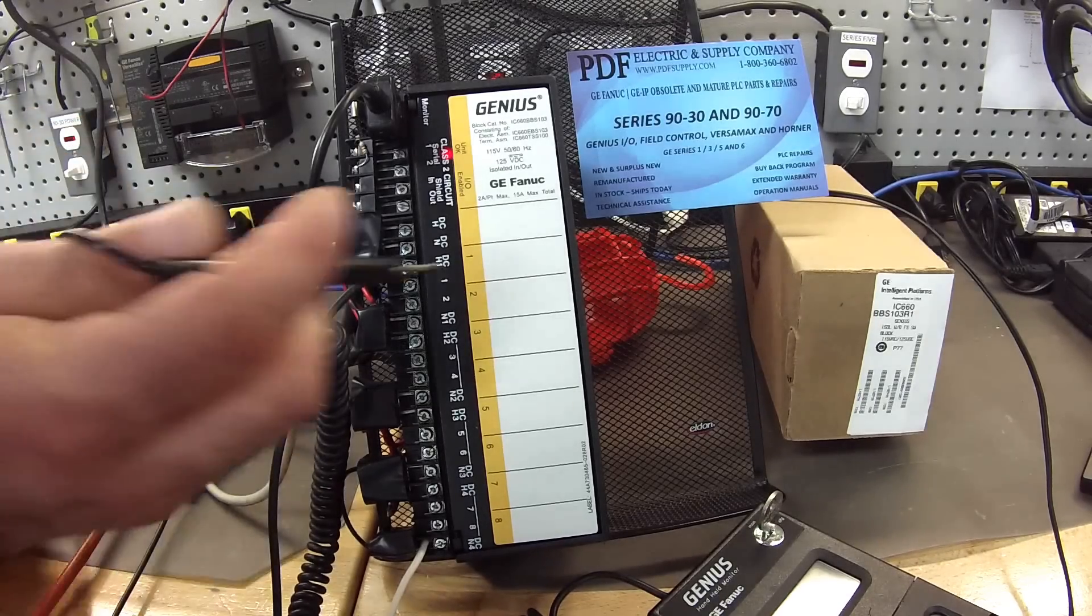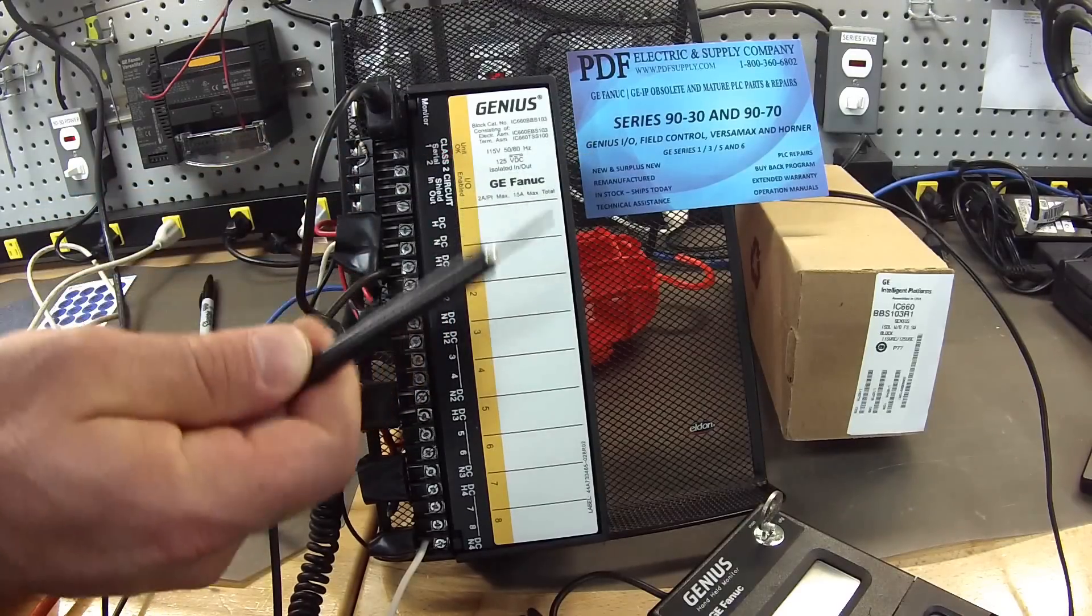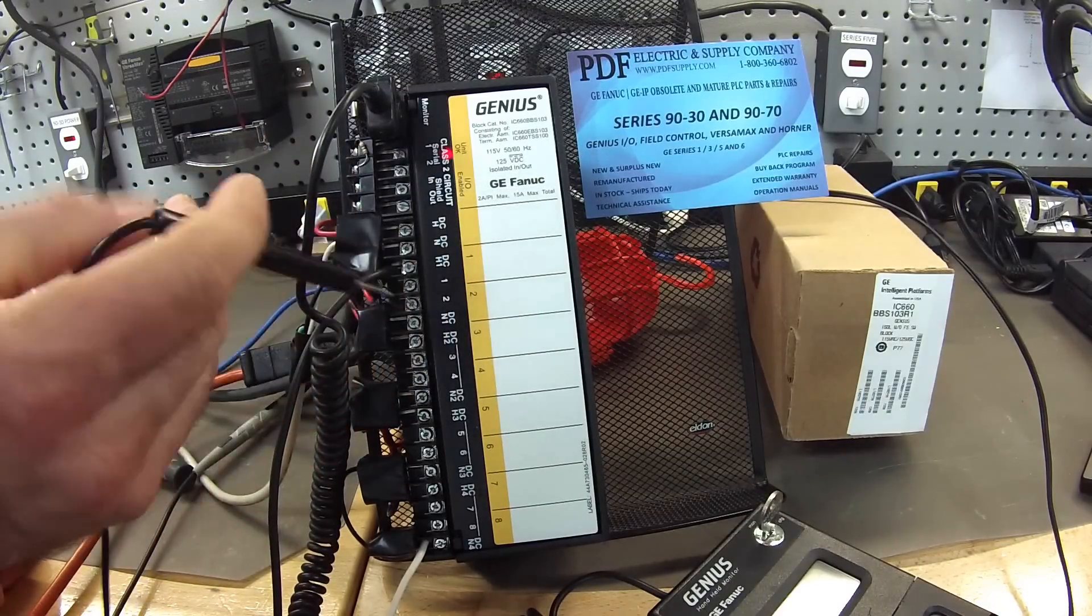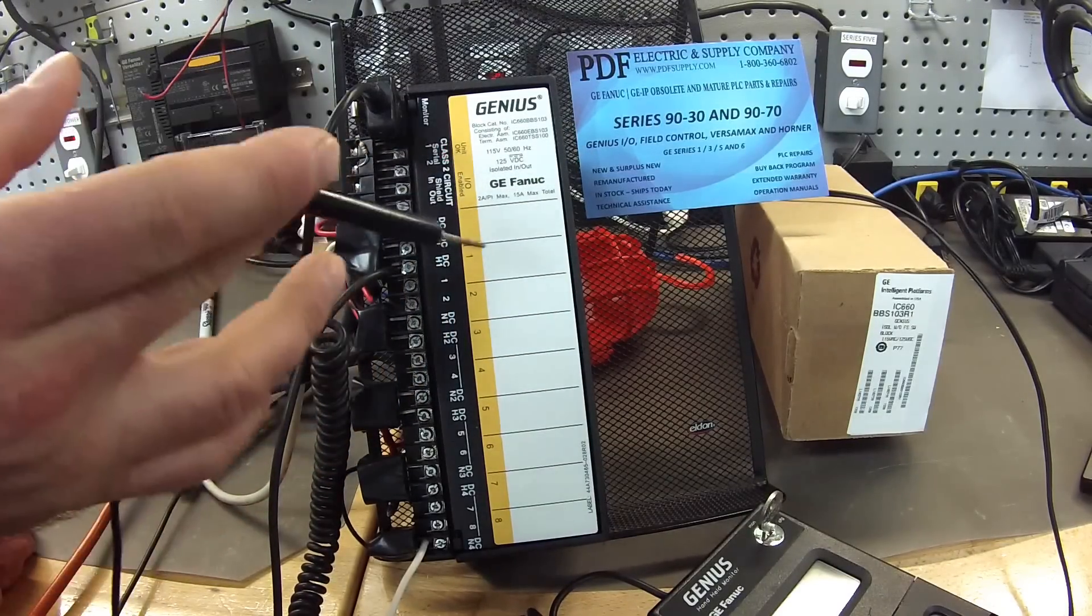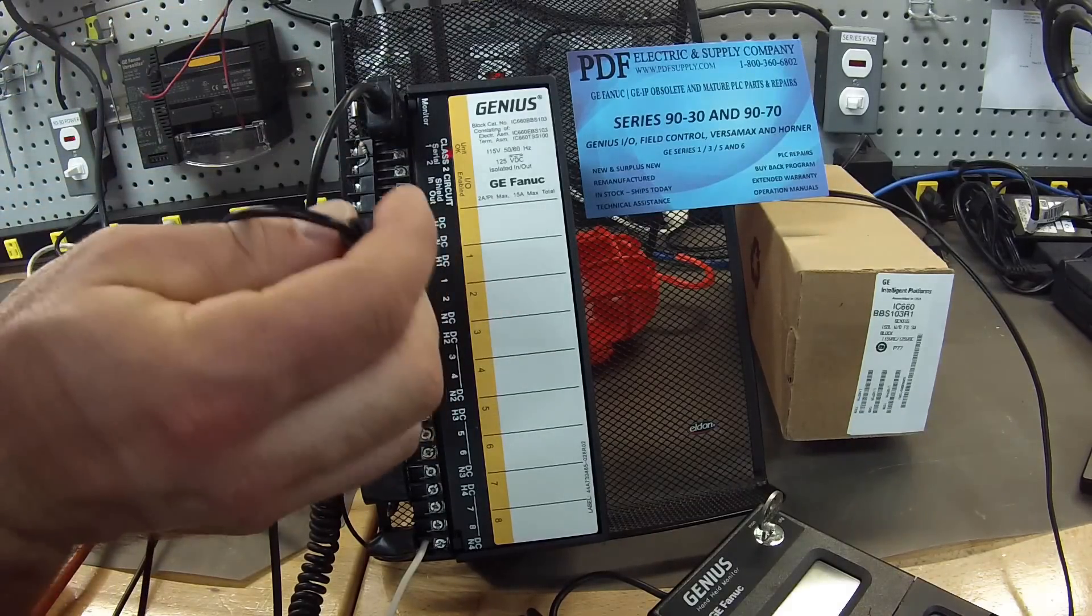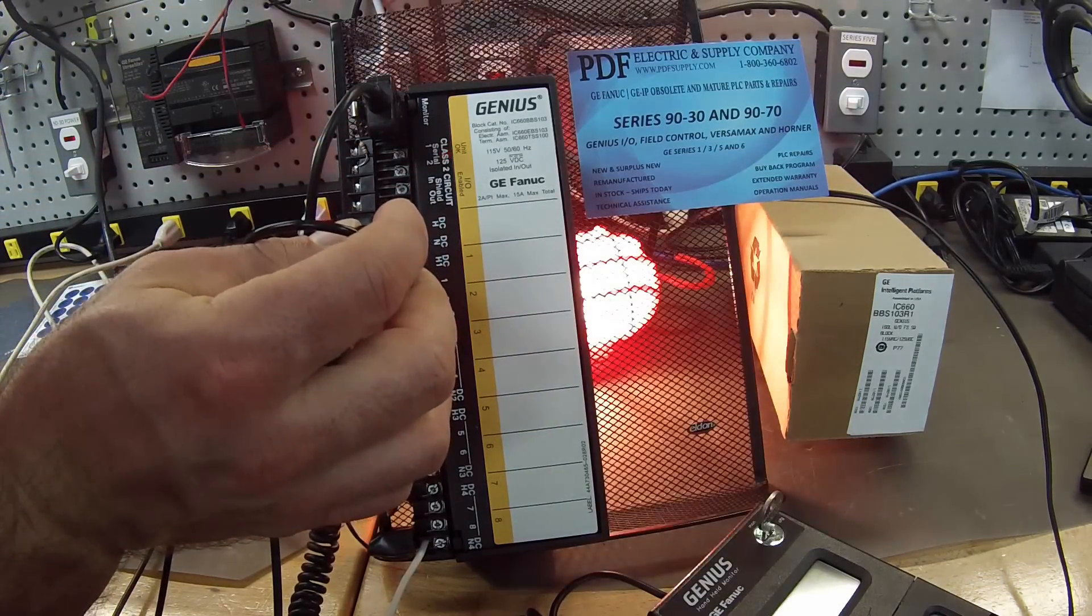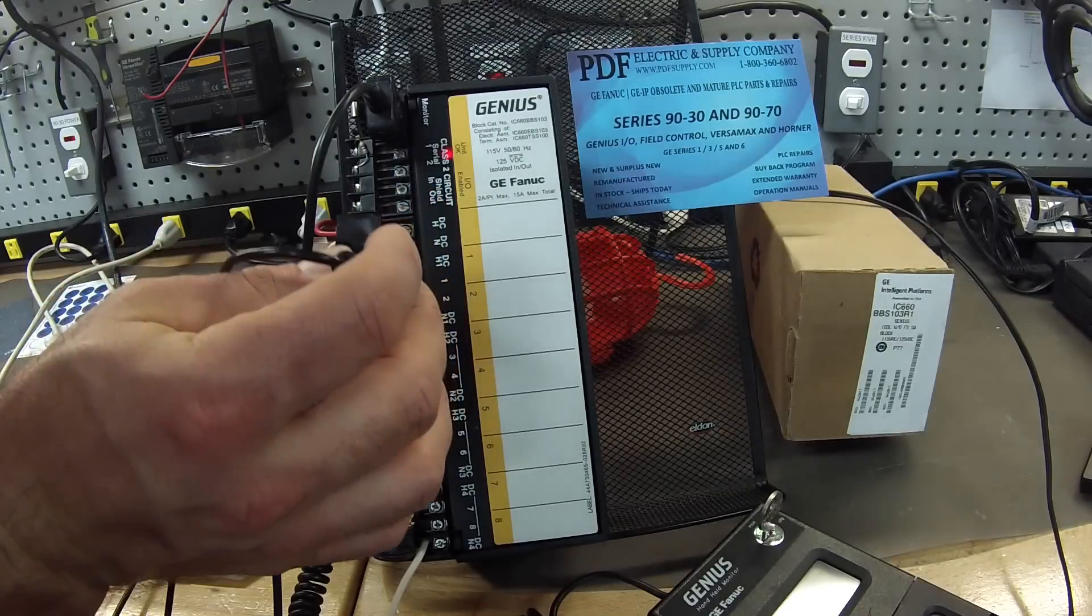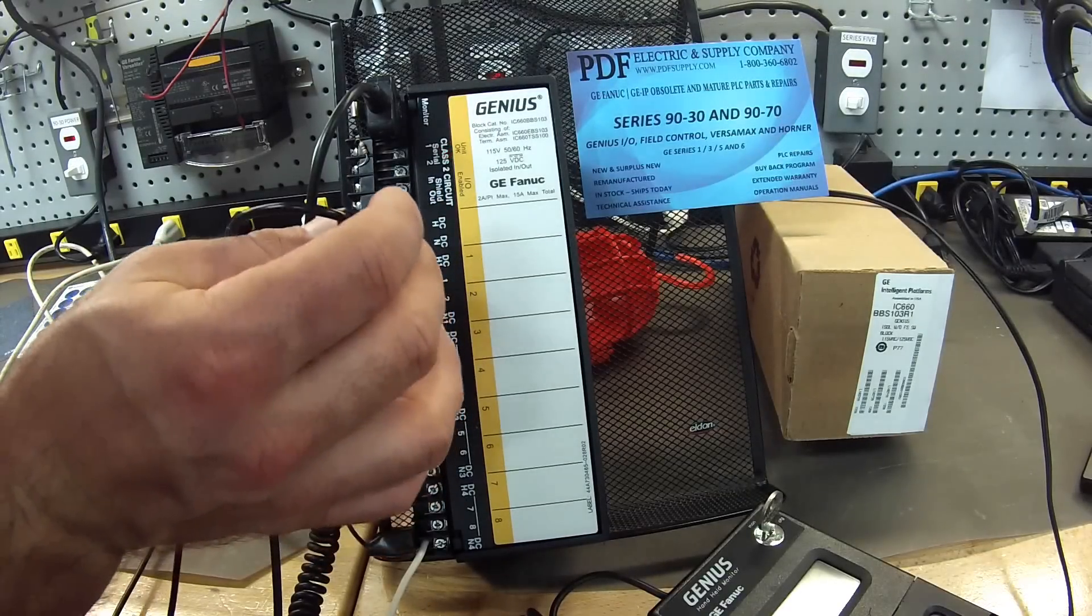Now before I touch this lead, again this is the hot lead from my drop light to the outputs, I want to test again to make sure that my light is working still. Just, you never know. It's a good working light, and it won't get any false reading because I know it works.